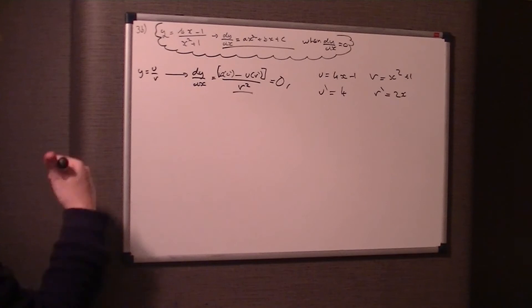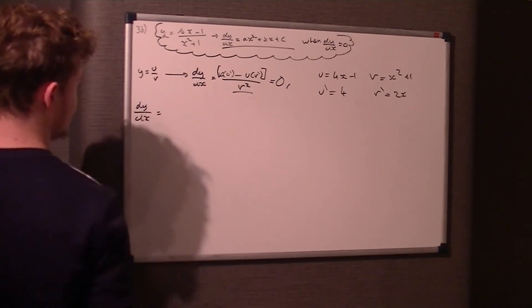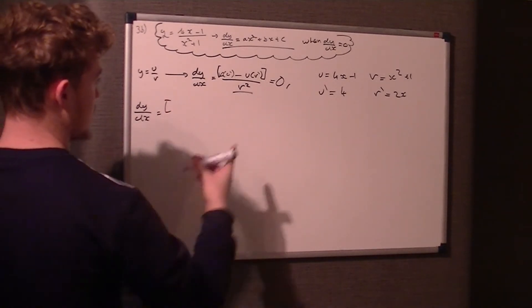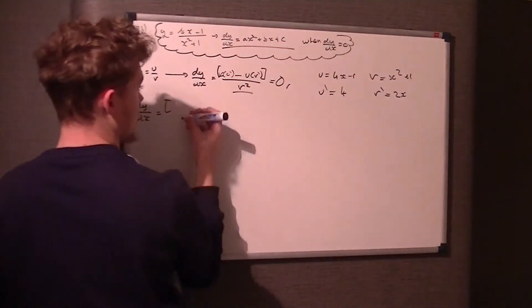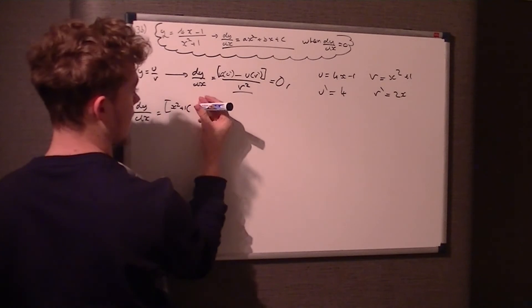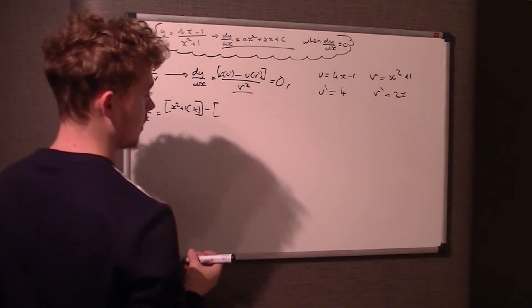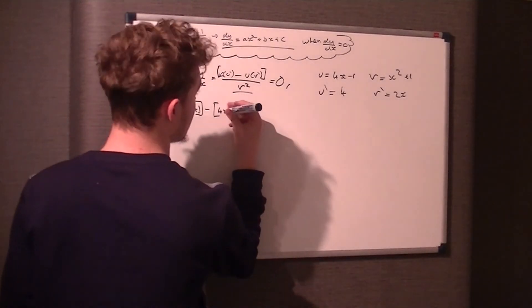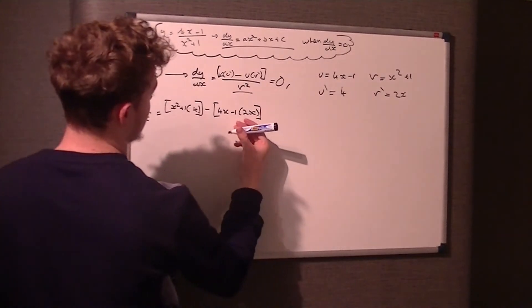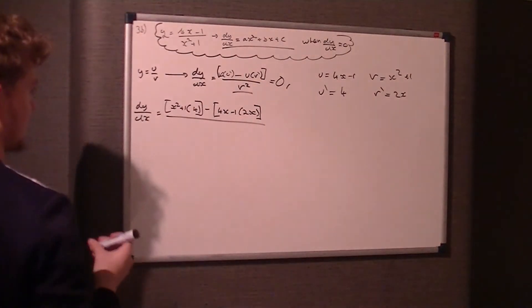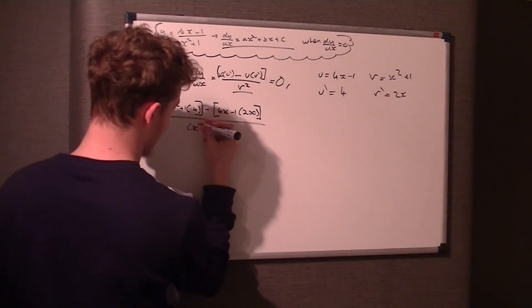What we're going to do now is put it in this formula: dy/dx. We just write in what each thing is. v times u', so (x² + 1) times 4, take u times v', that's (4x - 1) times 2x, all over v², which is (x² + 1)².